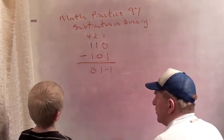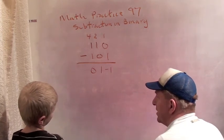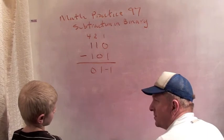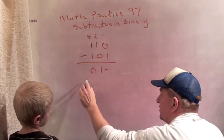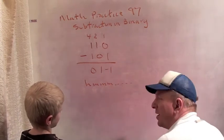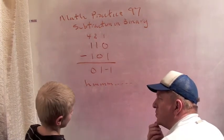Zero minus one is minus one. Minus one. Wait a minute. Now we have a minus one as a digit. Hmm. How are we going to deal with that?